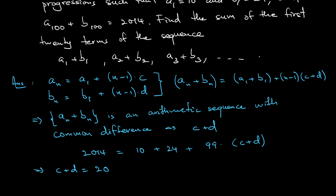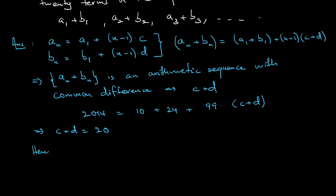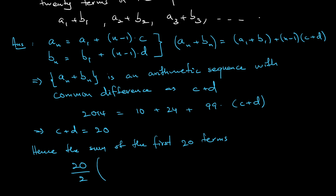The first term is 34. To find the sum of the first 20 terms: S = (number of terms / 2) × (first term + last term). The 20th term = 34 + 19×20 = 414. So S = (20/2) × (34 + 414) = 10 × 448 = 4,480. That is the final answer.